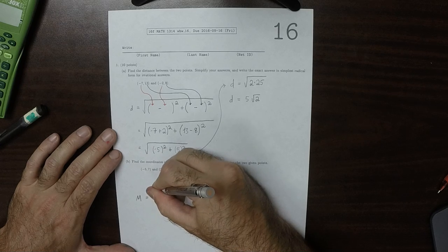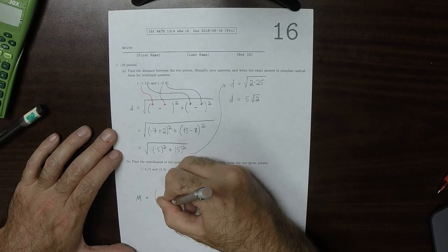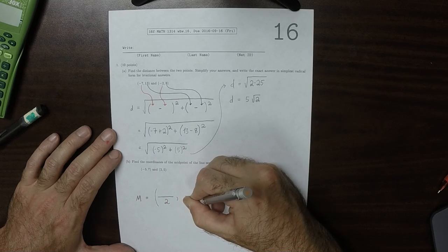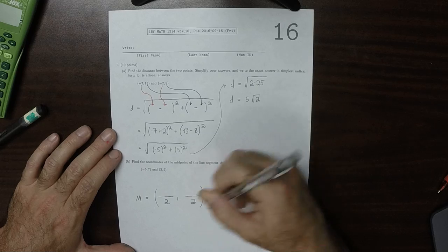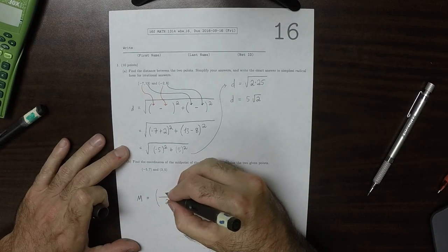The first coordinate will be an average, and the second coordinate will be an average. And in this case, we'll have pluses.